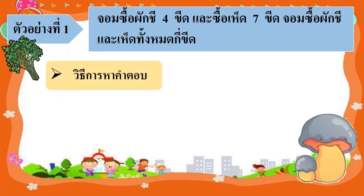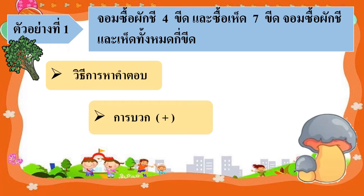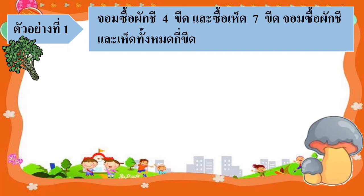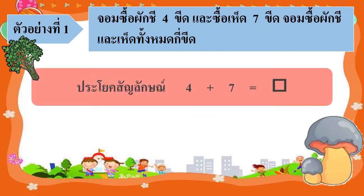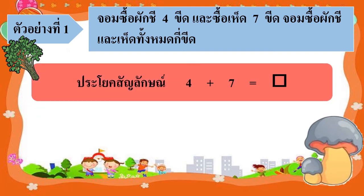วิธีการหาคำตอบจากโจทย์นะคะ เราจะเห็นได้ว่าจอมซื้อผักชีและเหตุทั้งหมด ดังนั้นจึงใช้วิธีการบวก เราจึงสามารถเขียนเป็นประโยคสัญลักษณ์ได้ดังนี้ ประโยคสัญลักษณ์ 4 บวก 7 เท่ากับเท่าไร